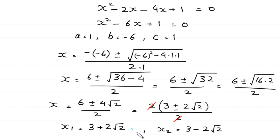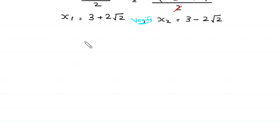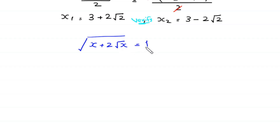Because we have solved a radical equation, we must verify these values of x by substituting them back into the original equation. The original equation is square root of x plus 2 times square root of x equals 1.